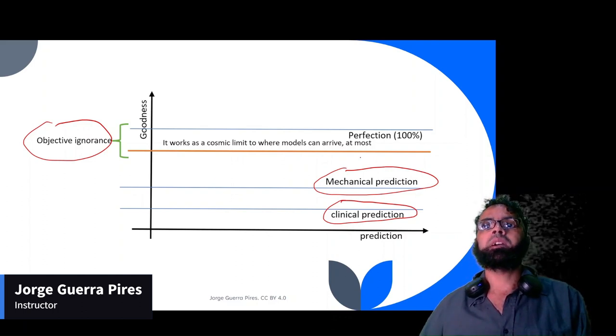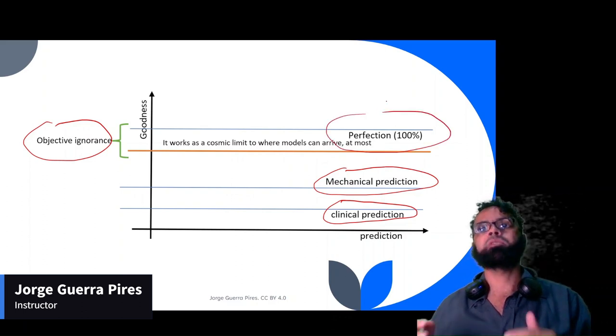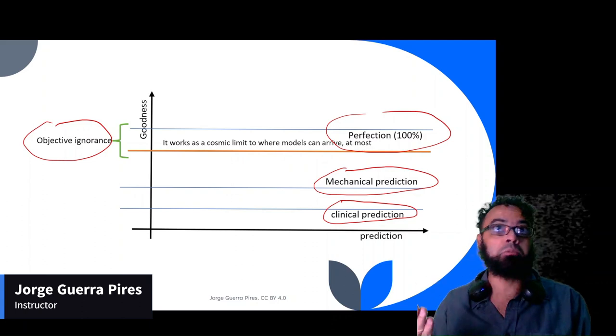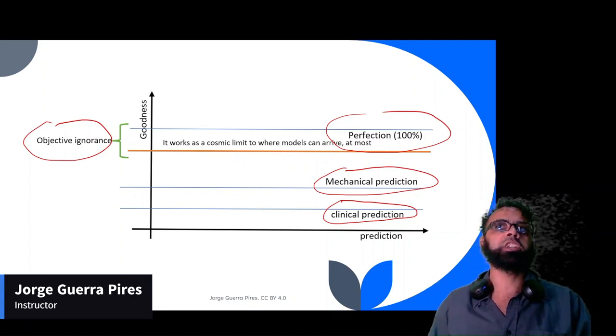The perfection, which is 100% accuracy on the model, is, I believe, impossible, even for models, because things change all the time.